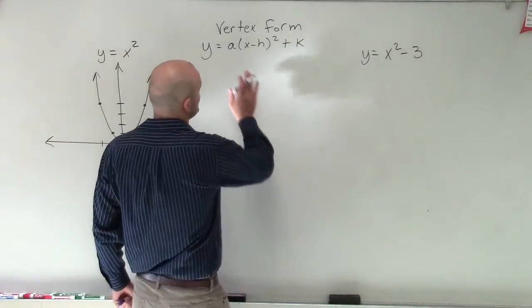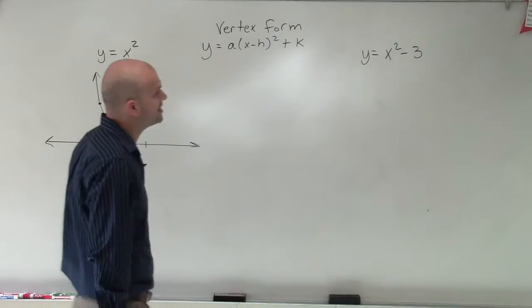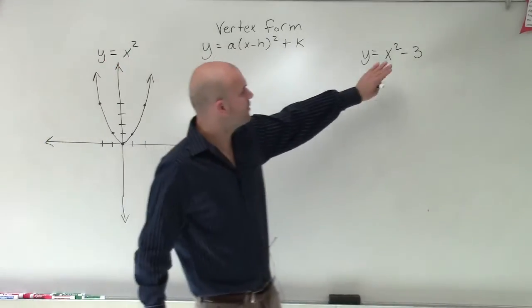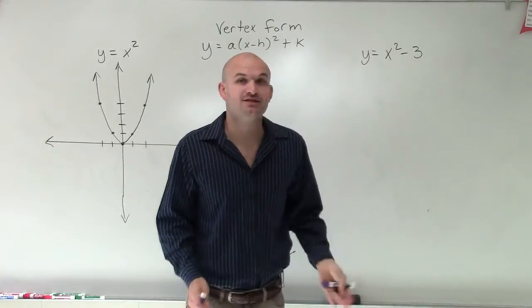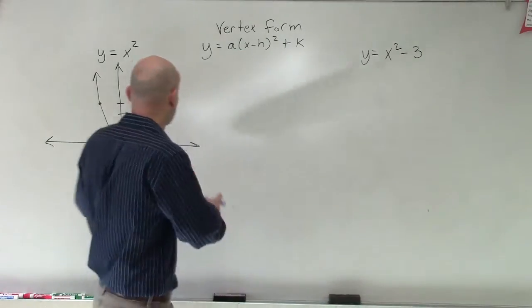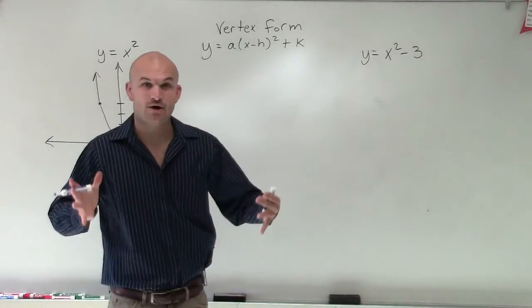So when we looked at this, x minus h squared plus k, what we can see is whenever I take my function, my parent graph, and I subtract 3, now what that's going to do is that's just going to take my parent graph and then shift it down 3.